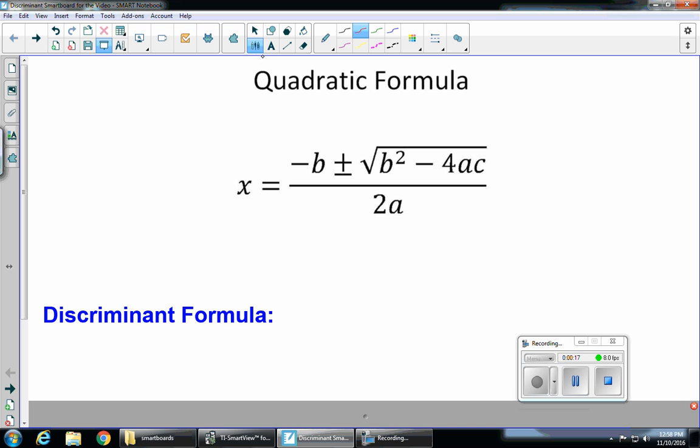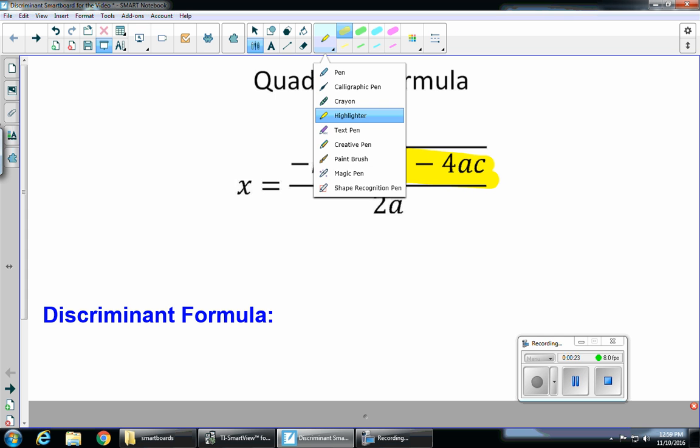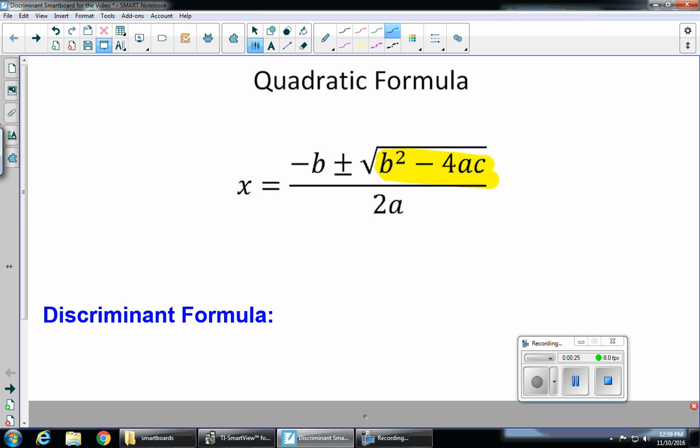So in the quadratic formula, our discriminant formula is what's underneath the radical, this b squared minus 4ac. That's known as our discriminant.